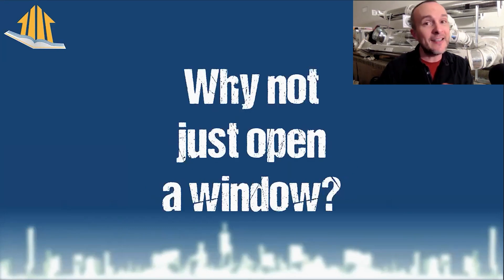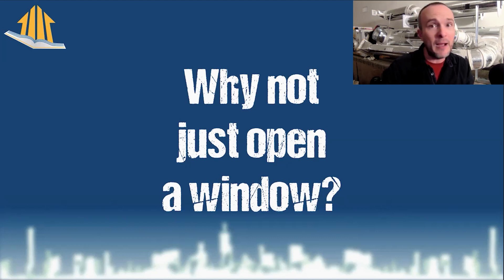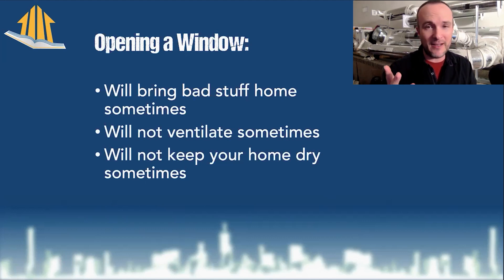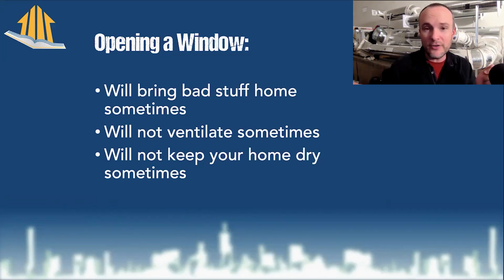The first thing we need to understand is the question that comes up all the time: why don't we just open windows anymore? There are three rules for controlling your home's chemistry and microbiology. The first is don't bring bad stuff home. Second is ventilate. And the third is keep it dry. Opening a window will sometimes bring bad stuff into your home because windows don't have filters — so the air comes in unfiltered.